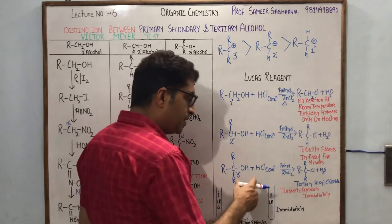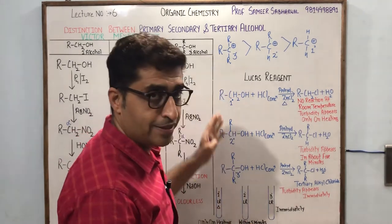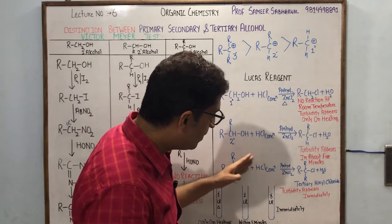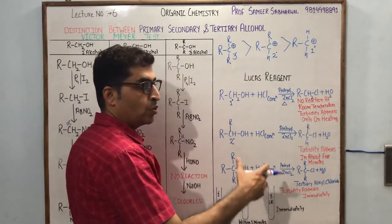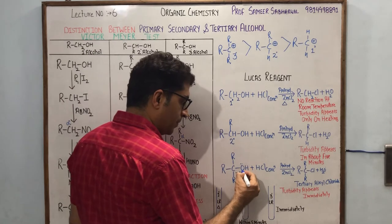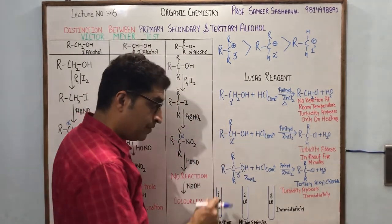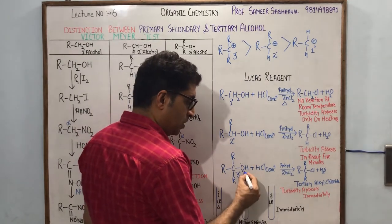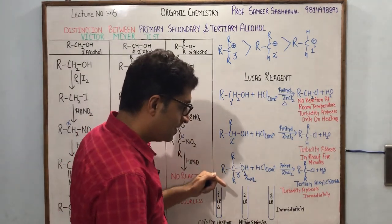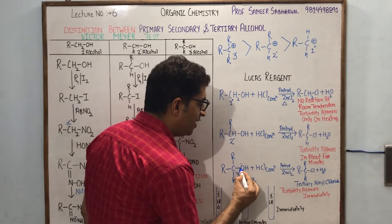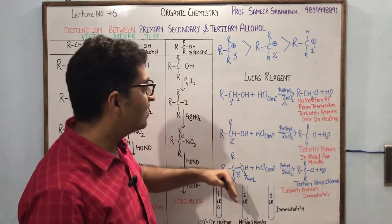Undoubtedly, anhydrous zinc chloride plays its role as a Lewis acid — it is electron deficient. It combines with the lone pair of OH and assists in removal of OH by weakening that bond, thus assisting in generation of the carbocation. Turbidity is milkiness — haloalkanes are not soluble in water, while alcohols are relatively more soluble in water. When the reaction occurs and haloalkane is formed, the solution becomes turbid.